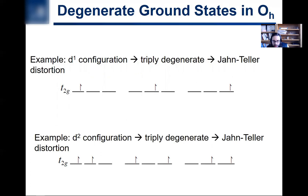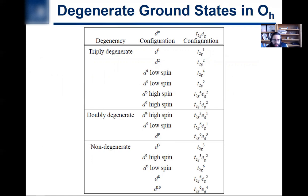Another example is a D2 configuration, which has two electrons in the T2g. There are also three ways to write that, so it's also triply degenerate and will have Jahn-Teller distortion. You can go through and look at which configurations have degeneracy. Basically, when you have gaps in where the electrons are in the T2g — meaning you don't have a half-filled T2g³ or a fully filled T2g⁶ — all of those are going to be triply degenerate.